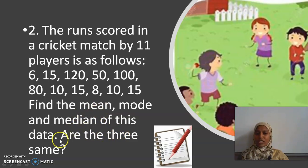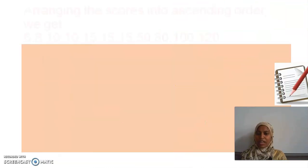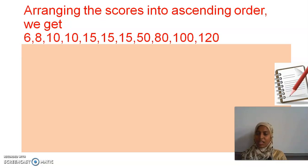Shall we get into the solution now? We should first arrange the scores in ascending order. Instead of writing this whole statement, you can write in short as arranged data. Arrange the data in ascending order, small to big. Start writing, which is the smallest one? 6, 8, 10, 10, 15, 15, 15, three times 15 is there. 50, 80, 100, and 120. I have written all the numbers. Every time check whether you have written all the 11 numbers.